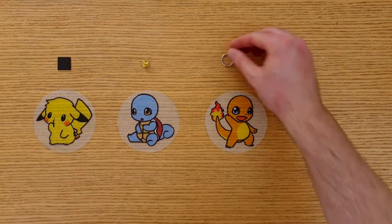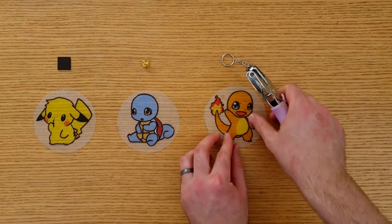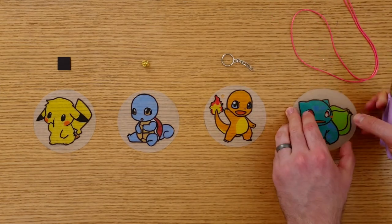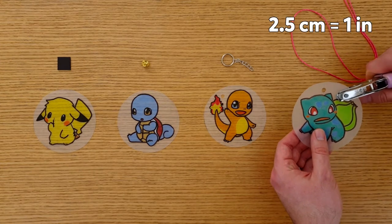I'm making a key ring with Charmander, so I need to punch a hole 1.25 centimetres from the edge of the plastic. I'm making a necklace with Bulbasaur, so I need to punch two holes 1.25 centimetres from the edge of the plastic, and two and a half centimetres apart.